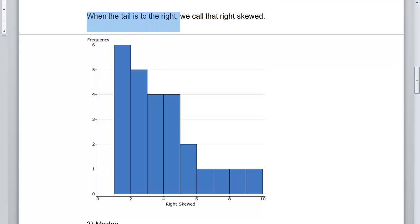When the tail is to the right, we call that right skewed. Mathematicians are very creative, but we're not creative at naming stuff. We just call stuff what it is.